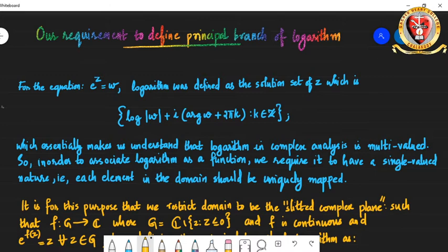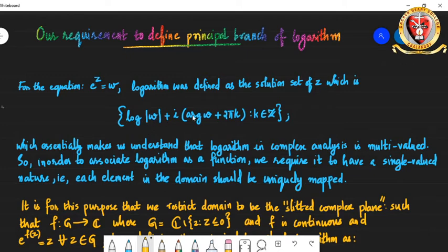Before going into revising the Cauchy-Riemann equations, we will just rewind what we did when we were dealing with the principal branch of logarithm. While we were defining logarithm, we understood that logarithm was defined as a solution set of z for the equation e raised to z equals w, and the solution set is the set of all log of modulus of w plus i into argument of w plus 2πk, where k varies over the integers.